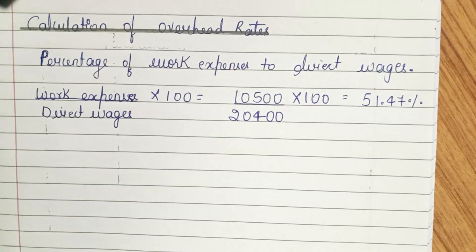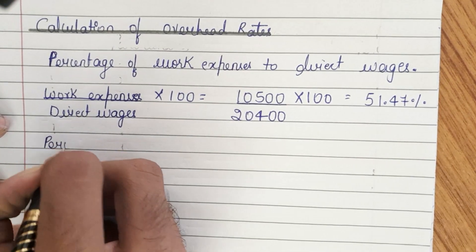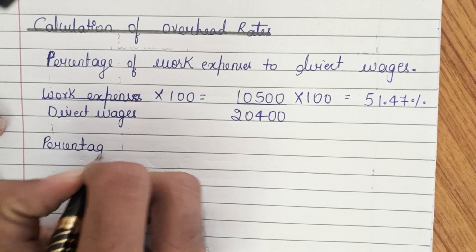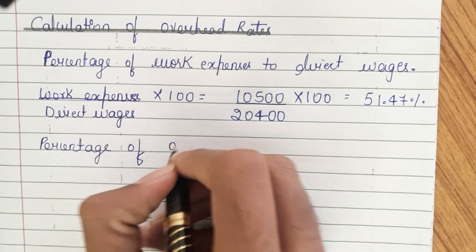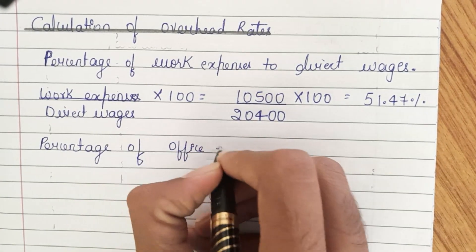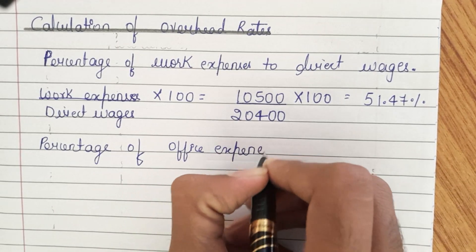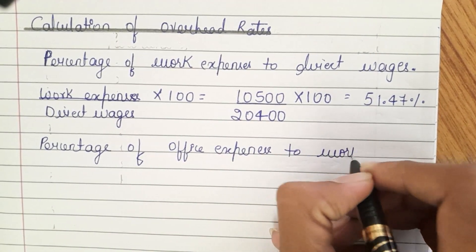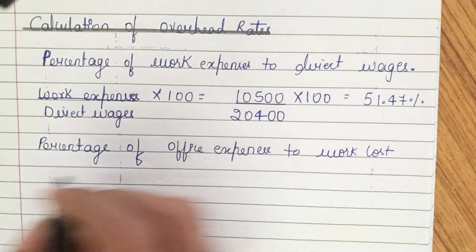Next we calculate the percentage of office expenses to work cost. The formula is: office expenses divided by work cost multiplied by 100.